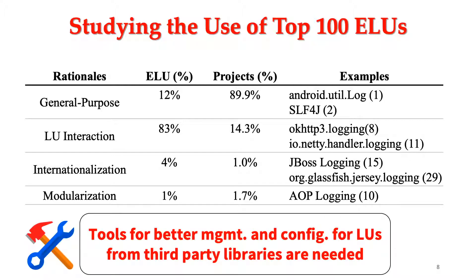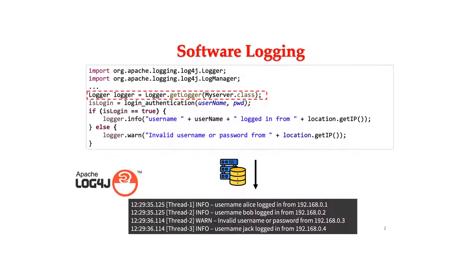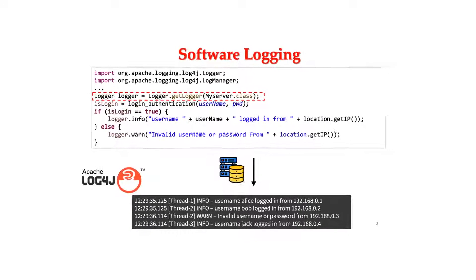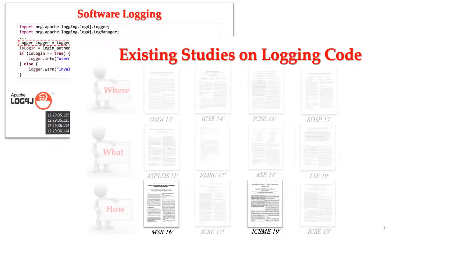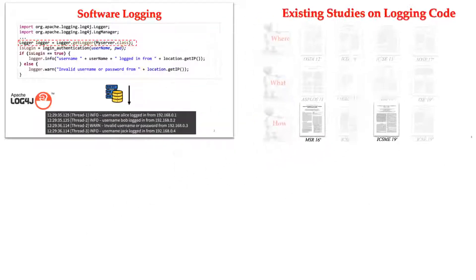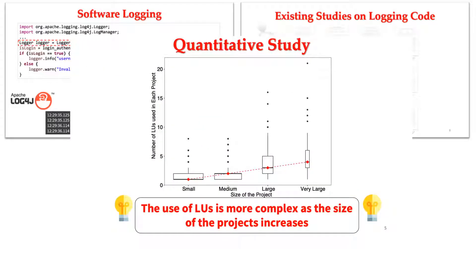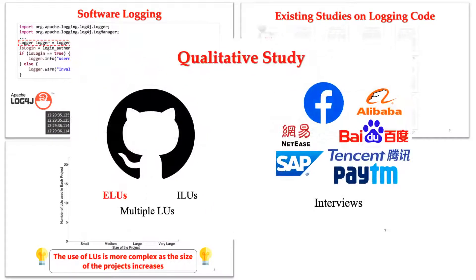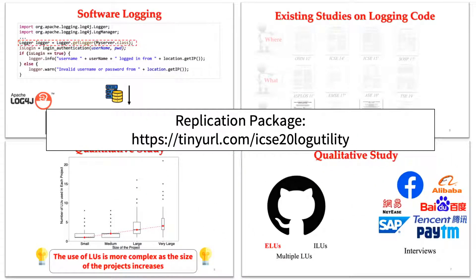So in summary, we first define what software logging is and show a real example. Then we check existing studies on logging code and find that only a few have touched the discussion of logging utilities. Next, we conduct a quantitative study and find that the use of LUs is more complex as the size of projects increases. Finally, we conduct a qualitative study of both open source and industry projects. We also provide a replication package — feel free to download it and play around with it.